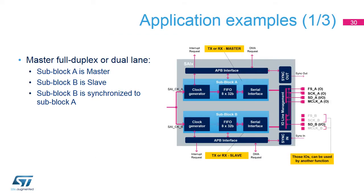For a full-duplex master mode, two data lines are needed, so two sub-blocks need to be used. The master sub-block A provides the synchronization to the slave sub-block B using the internal synchronization feature, or I/O line management. Note that in this example, sub-block B only uses the SDB. The amount of I/Os is reduced to its minimum thanks to the internal synchronization.